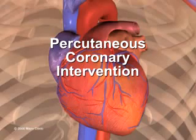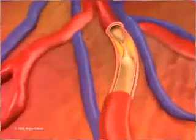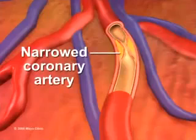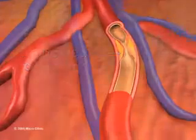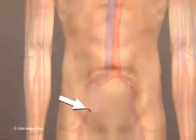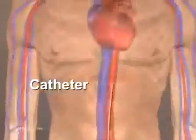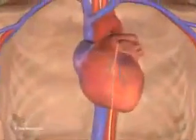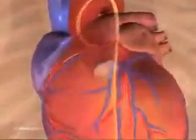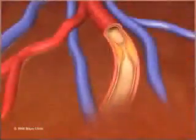Percutaneous coronary intervention, also known as coronary angioplasty, opens narrowed coronary arteries. A small, hollow tube called a catheter is inserted into an artery in the groin or arm and threaded to the affected artery.